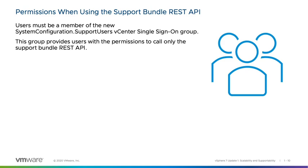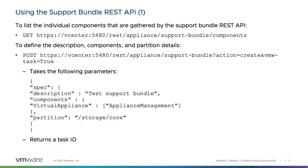You can list the individual components gathered by the support bundle REST API by issuing a GET statement. To generate a support bundle, you issue a POST statement. This statement takes a few parameters: description, components, and partition. The description is a text-based description of the task. You can optionally list individual components to gather — the default is to leave this blank and all components will be gathered. You can also optionally define the partition, which defines the temporary storage location for the generated log bundle. If omitted, the default storage location /storage/log will be used.